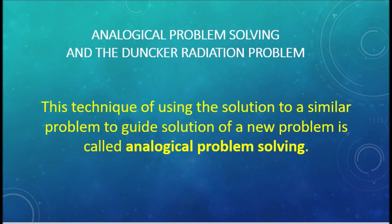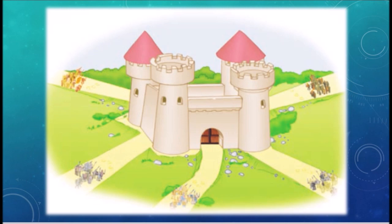Now we will talk about analogical problem solving and Dunker's radiation problem. The technique of using the solution to a similar problem to guide the solution of a new problem is called analogical problem solving. We will learn this through a story called The Fortress Story. A small country was ruled from a strong fortress by a dictator. The fortress was situated in the middle of the country, surrounded by farms and villages, with many roads leading to it. A rebel general wanted to capture the fortress, knowing that an attack by his entire army would succeed, and he gathered his army at the head of one road ready to launch a full-scale attack.